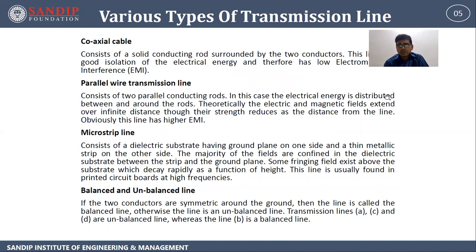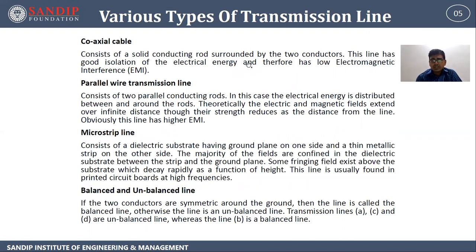Coaxial cable: the first type of transmission line. It consists of a solid conducting rod surrounded by two conductors. This line has good isolation of electrical energy and therefore has low electromagnetic interference.